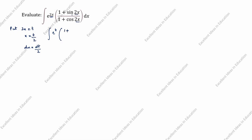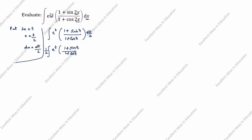Open the bracket: 1 plus sin2x becomes sin t, divided by 1 plus cos2x which becomes 1 plus cos t, close the bracket, and dx becomes dt/2. So the next step is the integral of e^t, with 1/2 taken outside, times the bracket (1 + sin t)/(1 + cos t), close the bracket, dt.